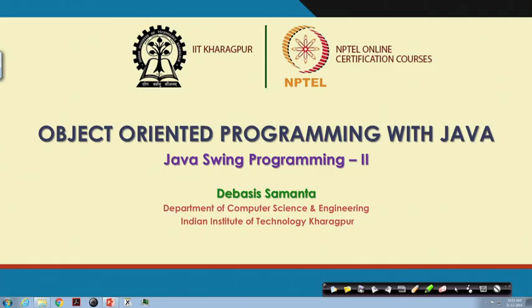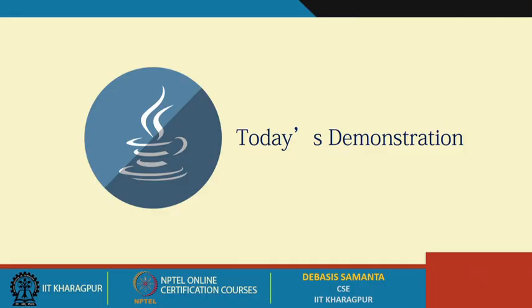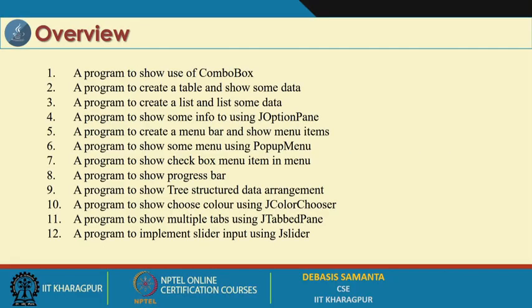This is a continuation of our demonstration related to the Java Swing package in Java. This is the second part of the demonstration. In this demonstration, we are going to cover a few more components like combo box, JOptionPane, JColorChooser, JTree, JTabbedPane, and many other things.